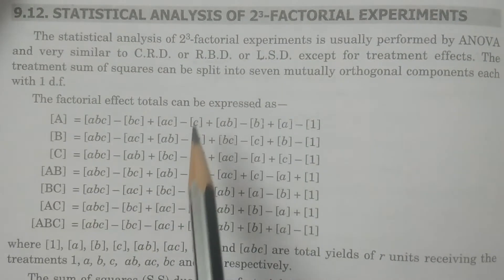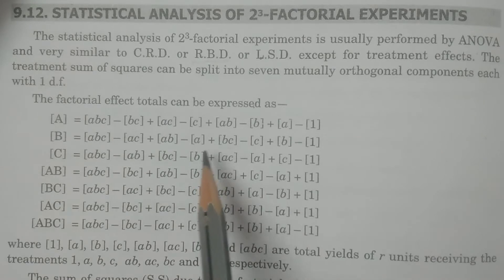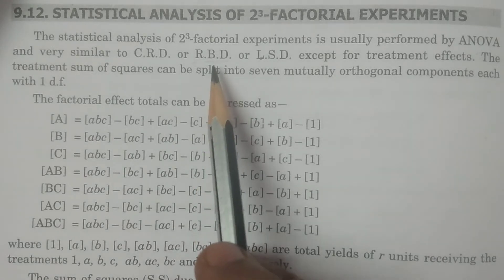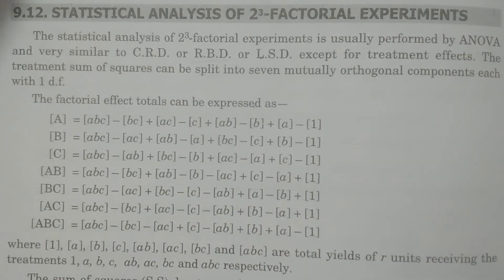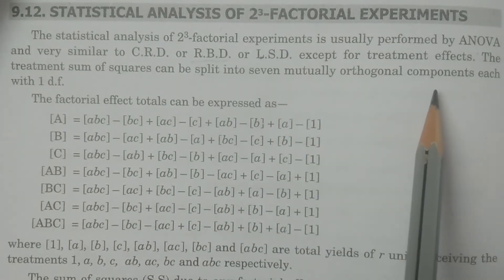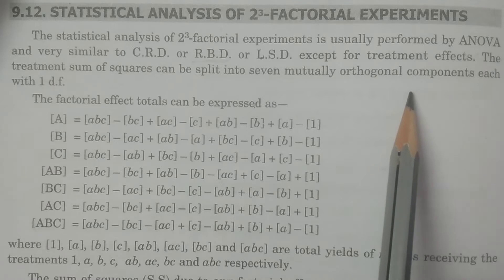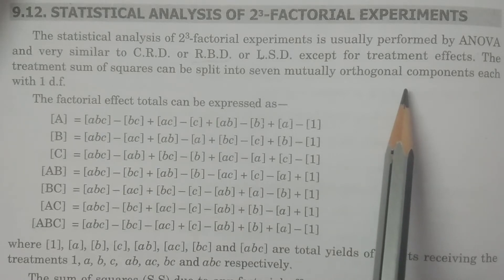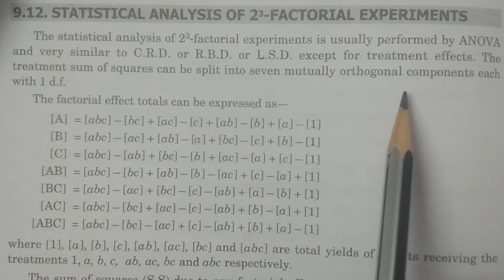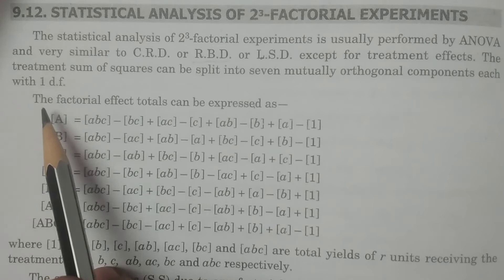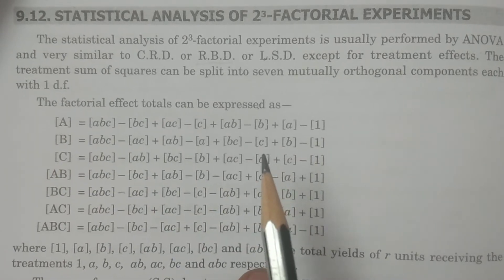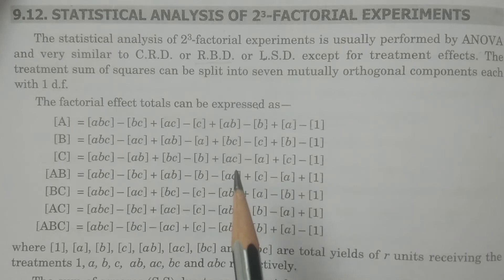In our context, we are using randomized block design (RBD) for treatment effects. The treatment sum of squares can be split into 7 mutually orthogonal components, which means treatment effects — each carrying one degree of freedom. So the treatment degrees of freedom is 7, split into various treatment effects.